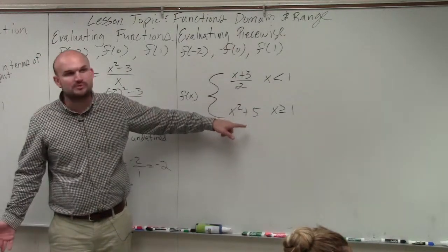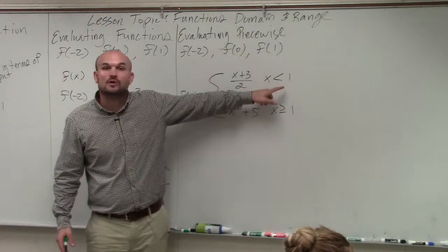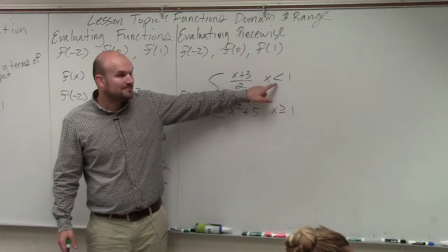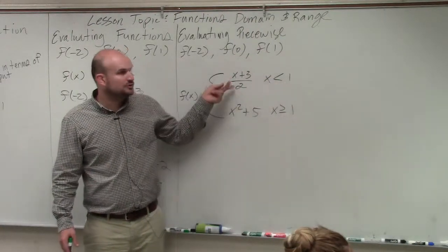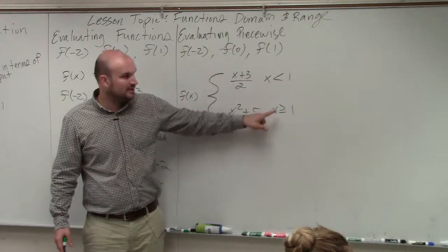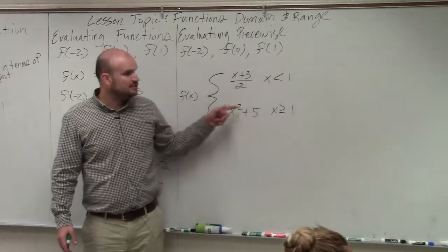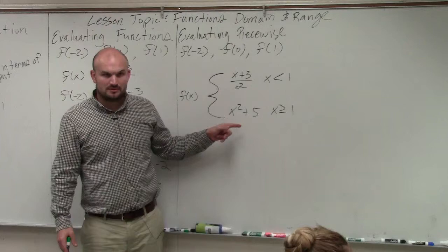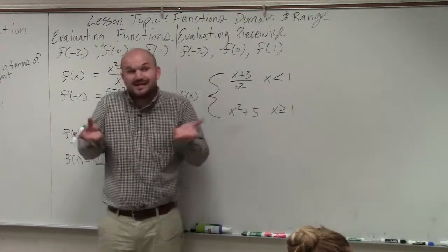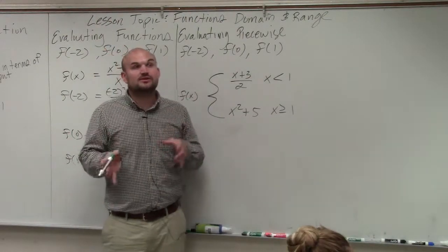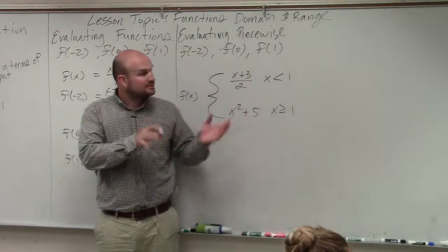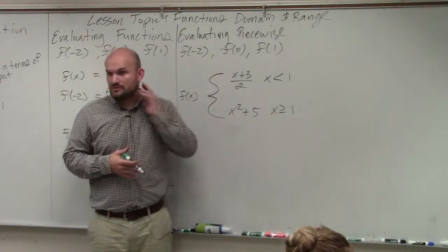Well, when do you use which rule? It depends on what your input is. When the input is less than one, you use this rule. When the input is greater than or equal to one, you use this rule. So basically, a piecewise function is saying, hey, I have more than one rule. So when certain things are like this, use that rule. When certain things are like that, use the other rule.